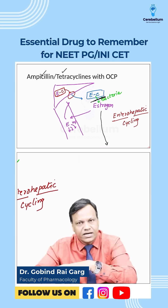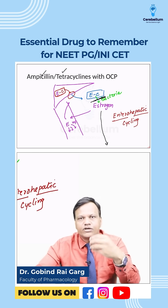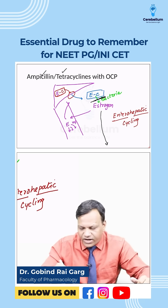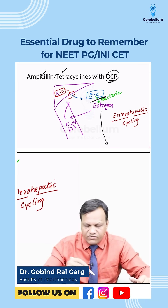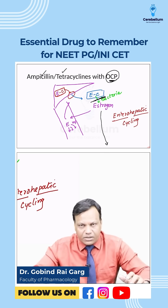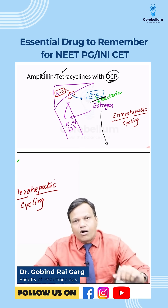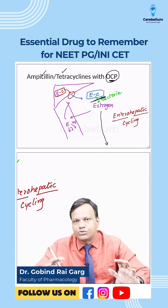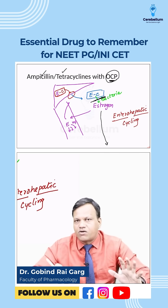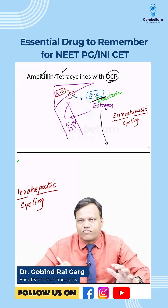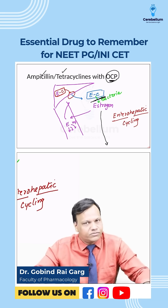The conjugated estrogen is instead excreted in the feces, meaning estrogen that would have been recycled is lost. This leads to failure of contraception. Therefore, long-term broad-spectrum antibiotics should not be used alongside oral contraceptives, or an alternative method of contraception should be adopted.